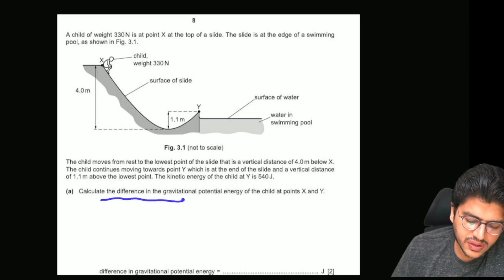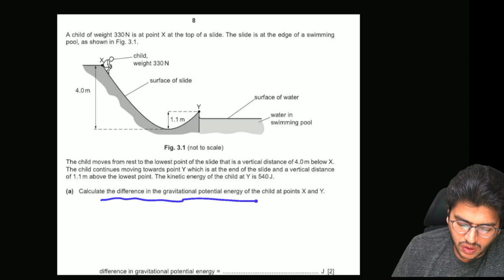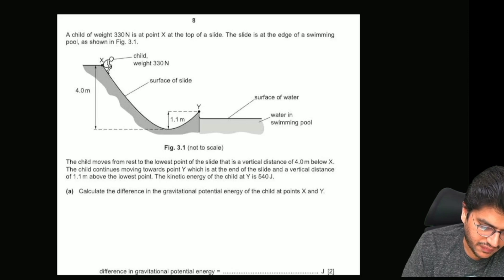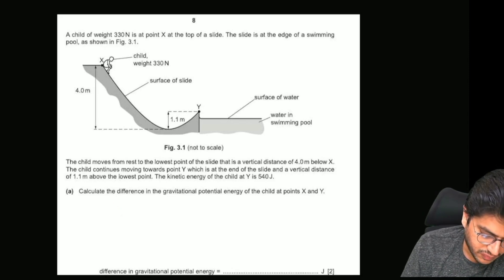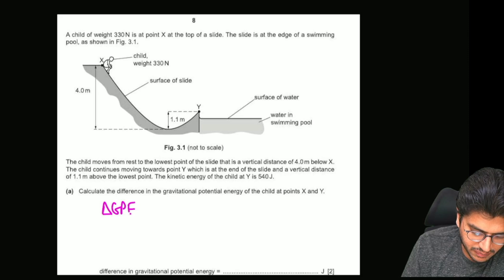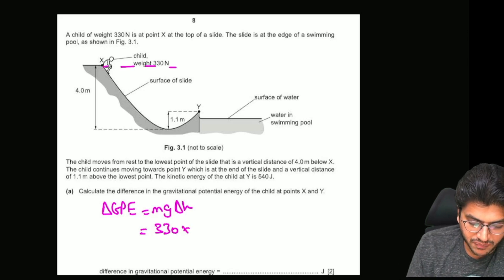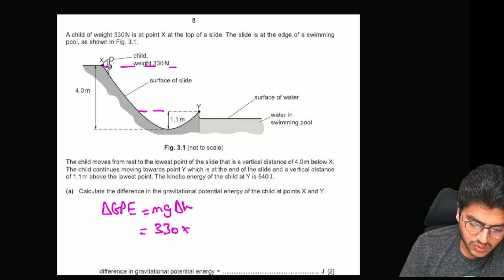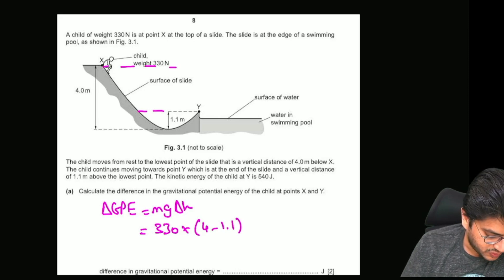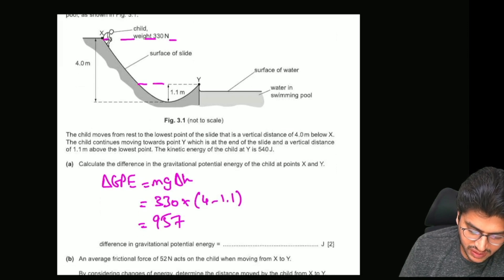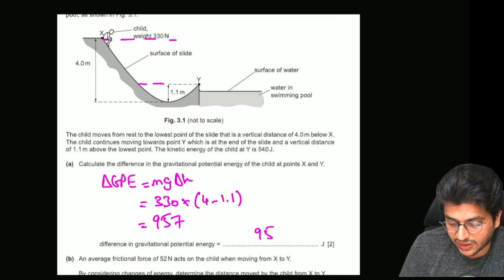Calculate the difference in the gravitational potential energy of the child at points X and Y. The GPE difference equals mg times delta h. Here mg is 330 Newtons, and delta h between these two points is 4 minus 1.1. So 330 times 2.9 gives you the difference as 957 joules, or you can write 960.